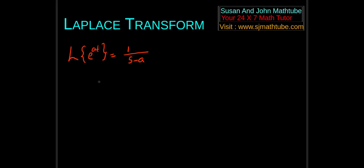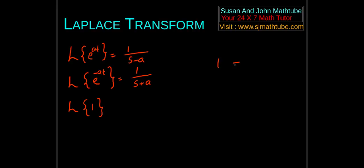So immediately we get another result: the Laplace transform of e to the power minus at, and that will be 1 by s plus a. And another one — Laplace of 1. Since 1 is actually e to the power 0, that gives us the result: Laplace transform of 1 is 1 by s.